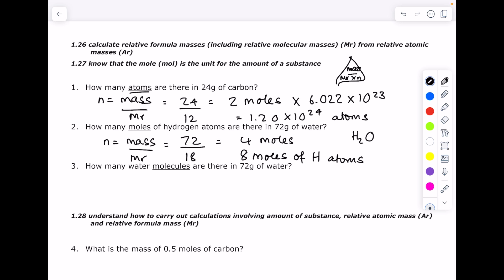Next up, how many water molecules are there in 72 grams of water? We know it's 4 moles. So we just do 4 times Avogadro's constant to get 2.41 times 10 to the 24.